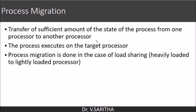Process migration means transferring a sufficient amount of the state of a process from one processor to another processor. When a process is being executed by one processor, after completing a particular stage it can be moved to another processor, and from there the target processor will execute it. Process migration takes place to share the load — if one processor is heavily loaded and another is lightly loaded, the load is shared by the less-loaded processor.